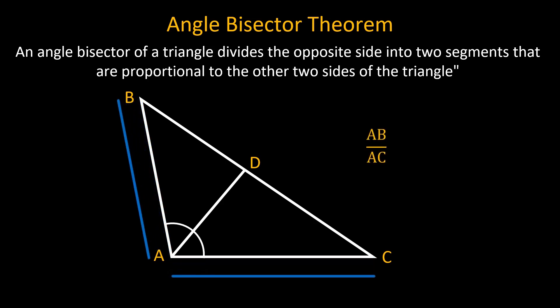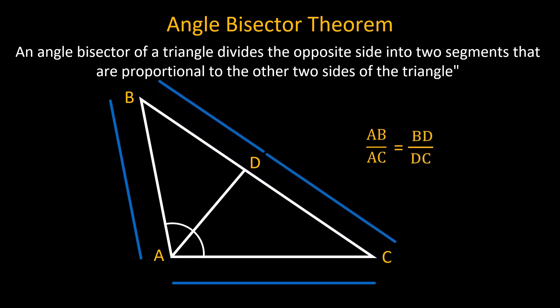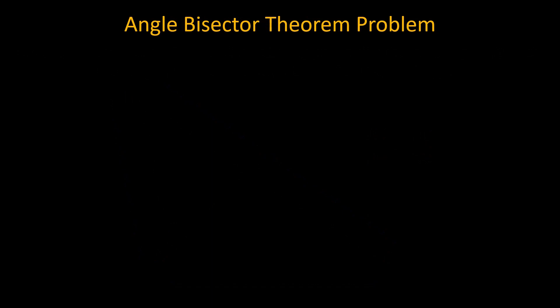Now let us solve a problem based on the angle bisector theorem. In triangle ABC, AD is the bisector of angle A meeting side BC at D. If AB is equal to 18 centimeter, AC is equal to 24 centimeter, and DC is equal to 12 centimeter, find BD.